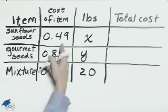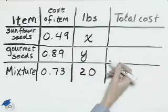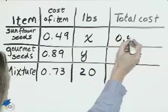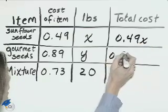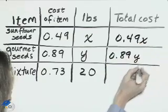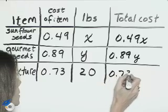The total cost is the product of the first two columns, 0.49X, 0.89Y, and the total cost column, 0.73 times 20.